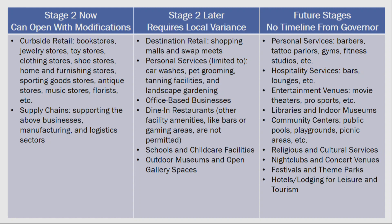Later Stage 2 or those requiring a local variance include: shopping malls, swap meets, car washes, pet grooming, tanning facilities, landscape gardening, office-based businesses, and dine-in restaurants. The governor says those cannot be open in California without a local variance. Some of these were brand new to us when the guideline was released Thursday. Future stages — with no timeline — include barber shops, tattoo parlors, gyms, hospitality services, bars, lounges, and entertainment. Notably, libraries, playgrounds, and picnic areas have no timeline whatsoever for restoration.